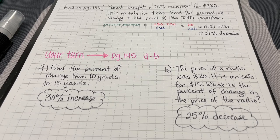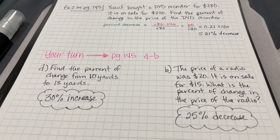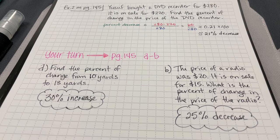In Problem A, to go from 10 yards to 13 yards would be a 30% increase. And in Problem B, to reduce the price from $20 to $15, that would be a 25% decrease.